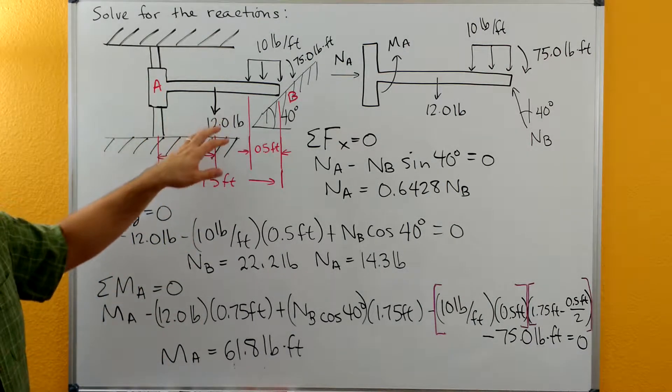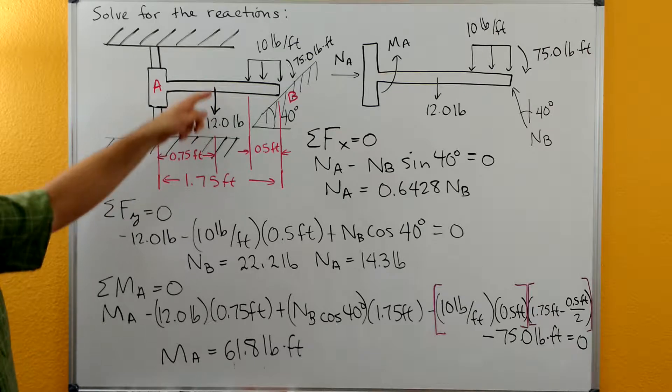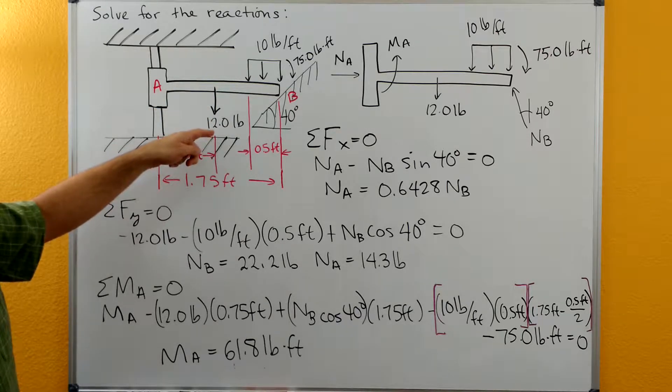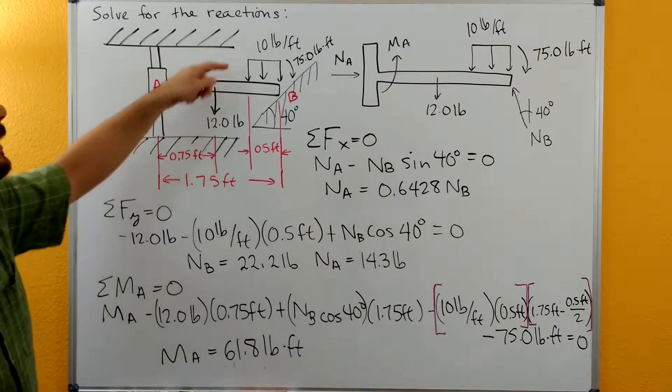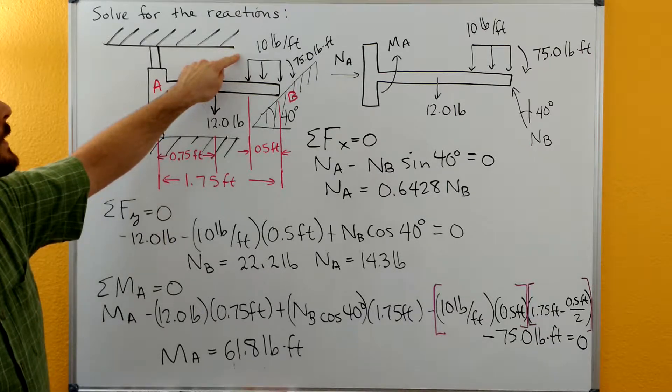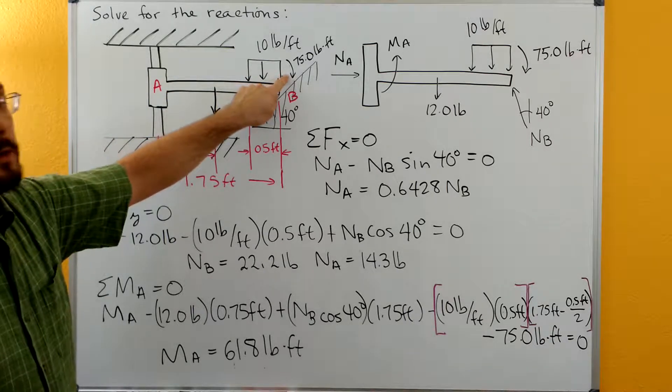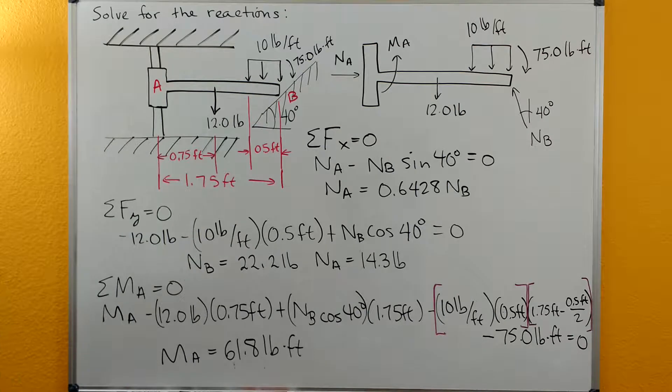Now we've got just a real assortment of loadings on the beam. We have a 12 pound force going down, a 10 pound per foot distributed load here, and then on the end we have a 75 pound foot clockwise moment.